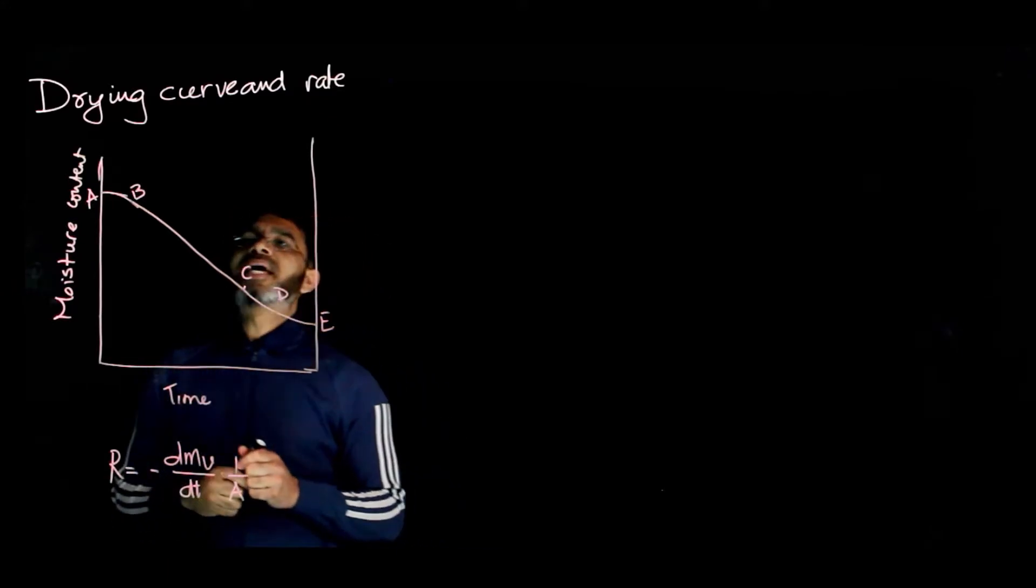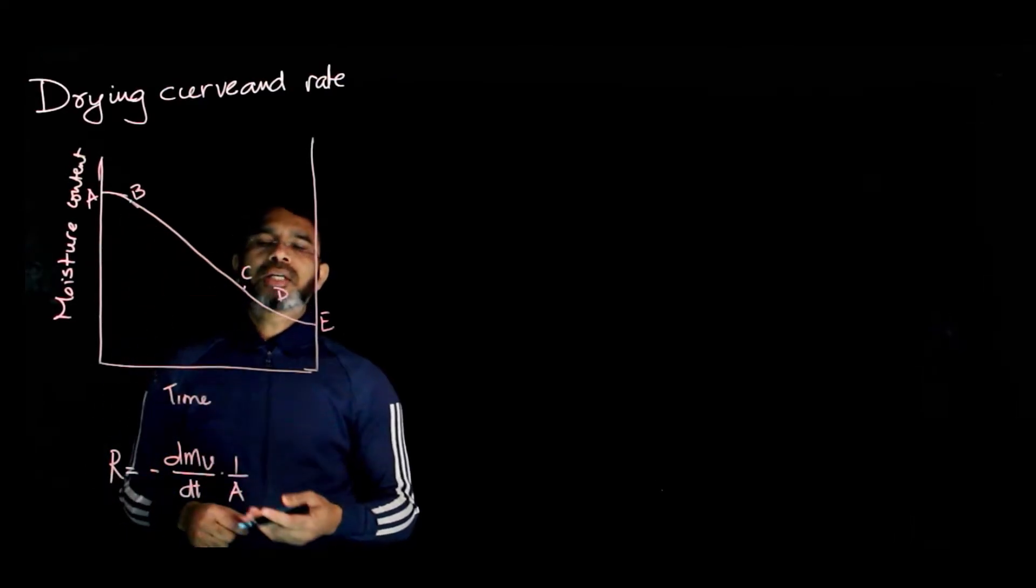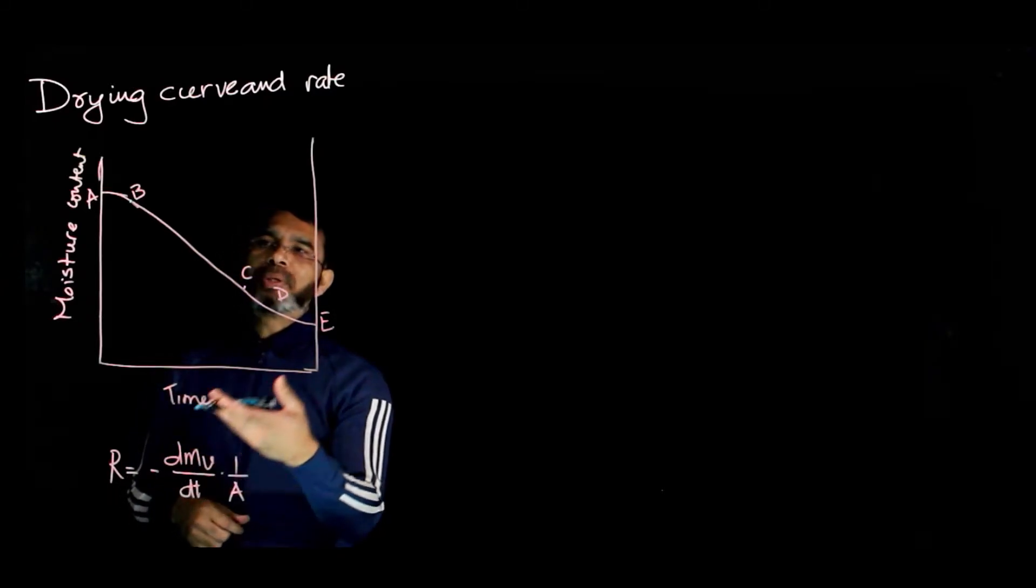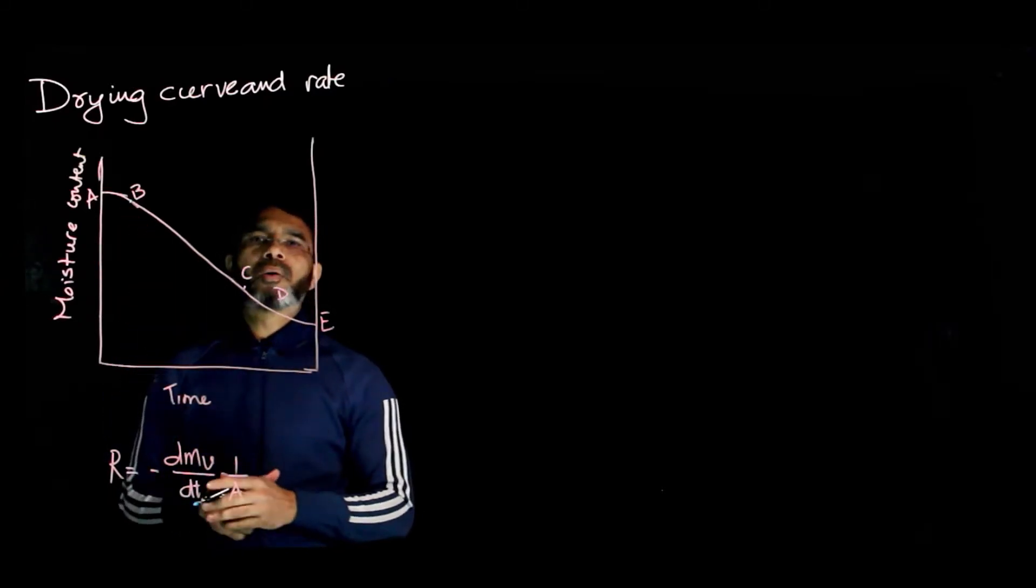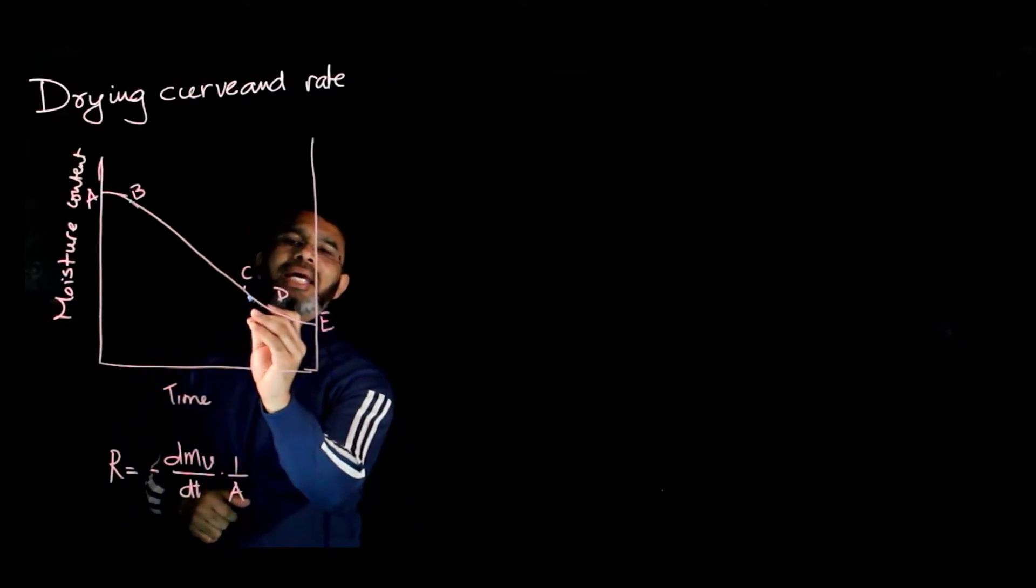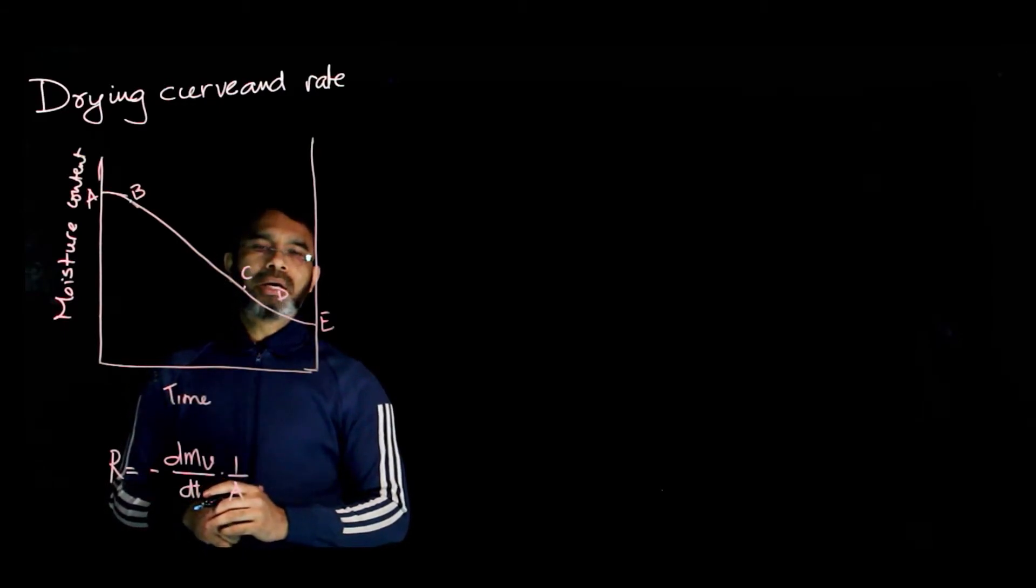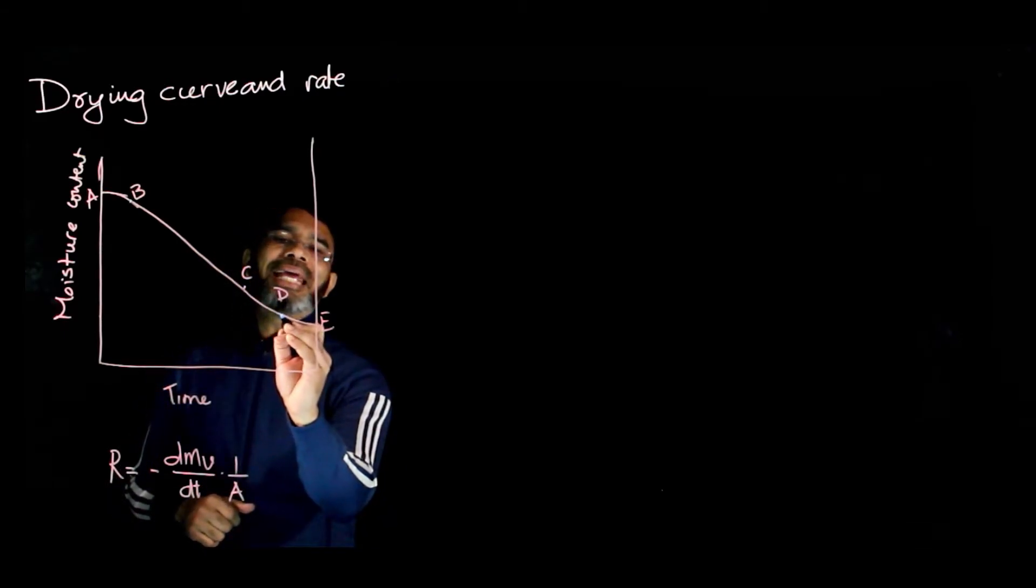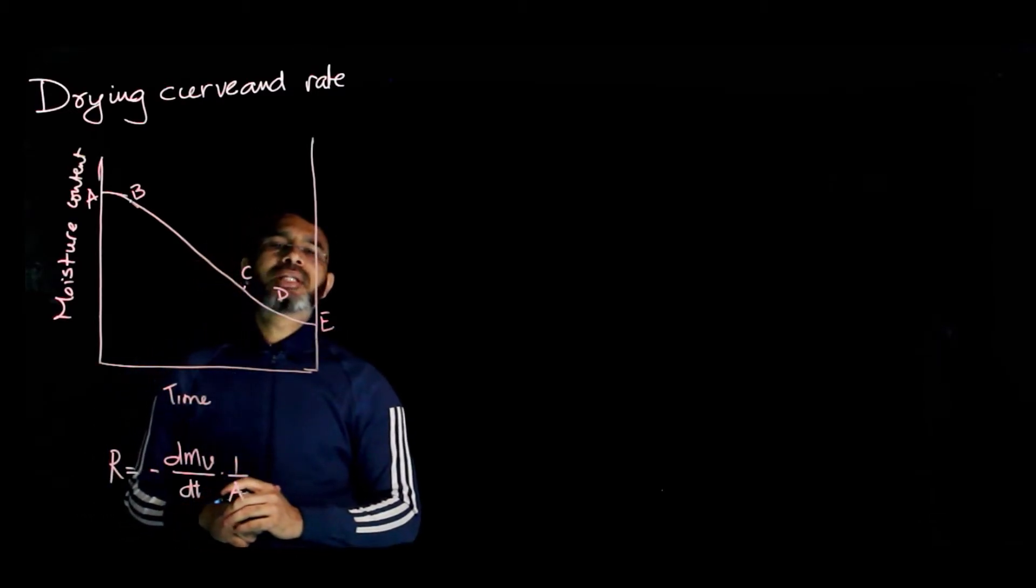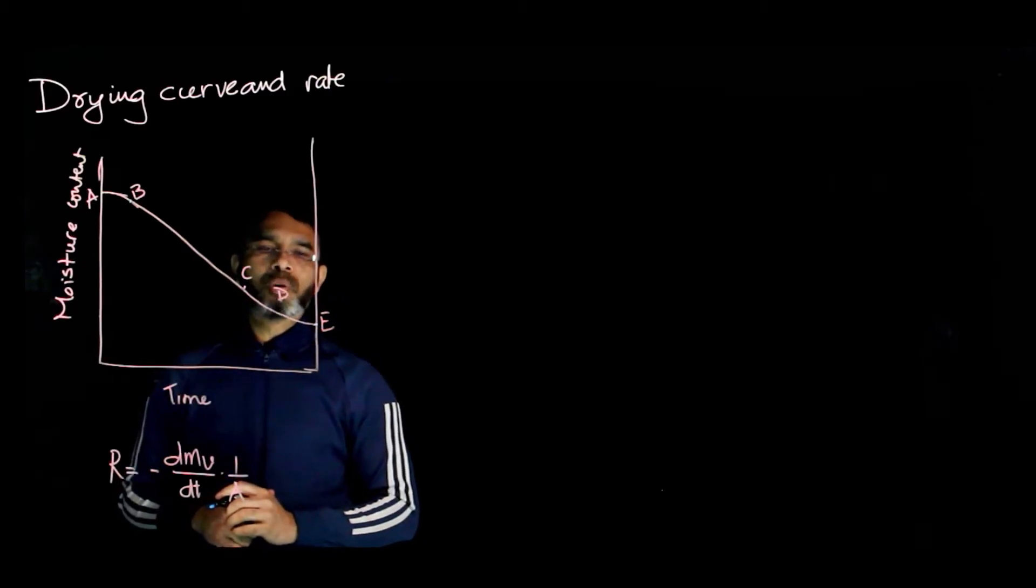Between A and B, the temperature increases. Between B and C, there is a continuous supply of water from the material to its surface, so water vapor is removed continuously. However, between C and D, this starts to decrease and there is not enough water on the surface to be removed. From D to E, we have even less water supply to the surface, so the rate further decreases. After a certain point, no more vapor is removed.